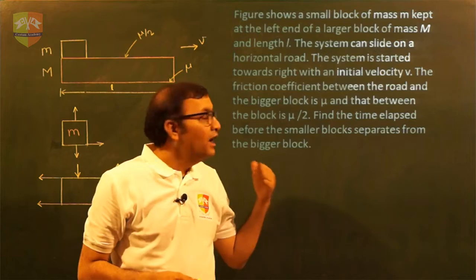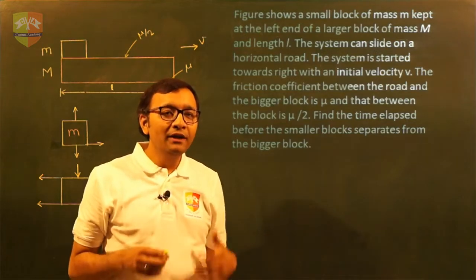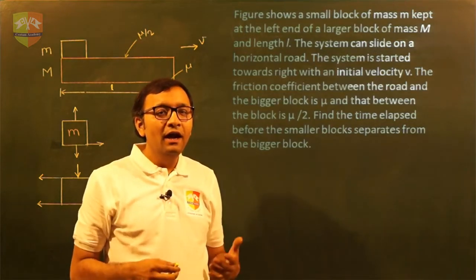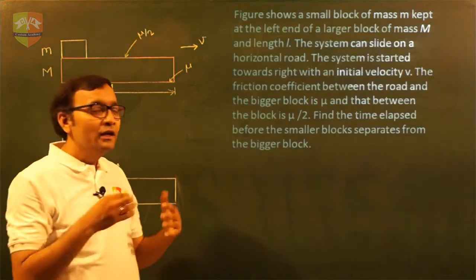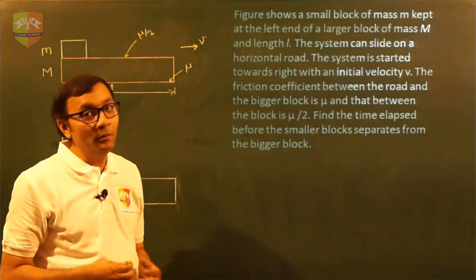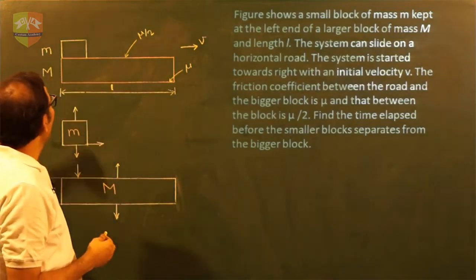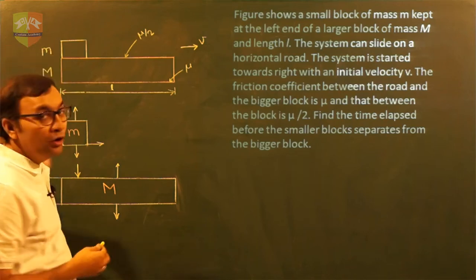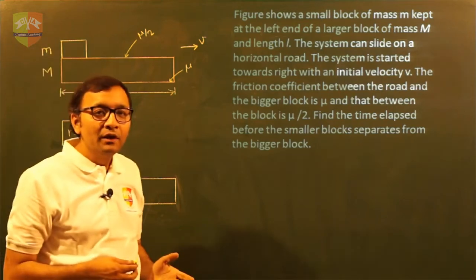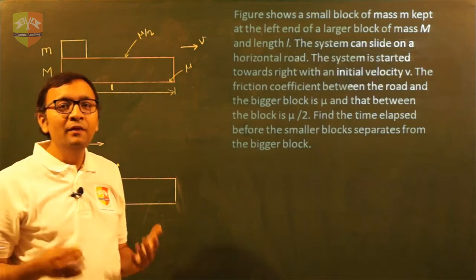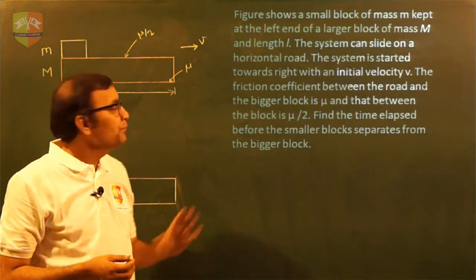So friends, we have taken a new problem to apply the basics that we have learned and to learn how we can step by step approach the problem. Here goes the problem: there is a small m kept on a larger mass capital M, the length of capital M is small l.